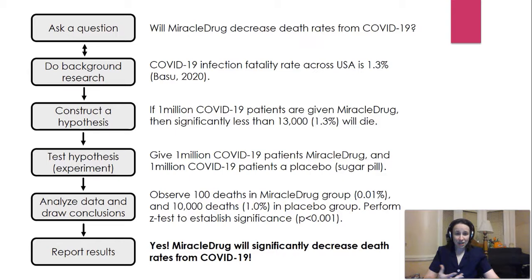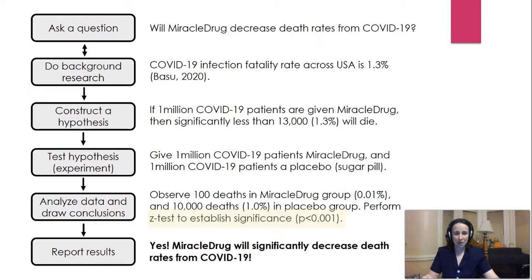Let's say I actually do this. I observe 100 deaths in the miracle drug group — that's about 0.01%. And I see about 10,000 deaths, about 1%, in the placebo group. It looks promising, but is it statistically significant? Because I have a large patient population size, I'll use a z-score to establish significance — in this case a p-value of less than 0.001. Because it's statistically significant, I can conclude that miracle drug will significantly decrease death rates from COVID-19.